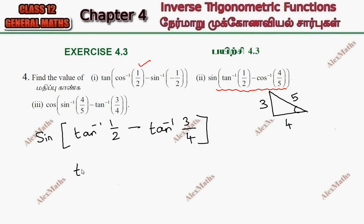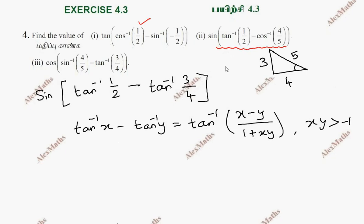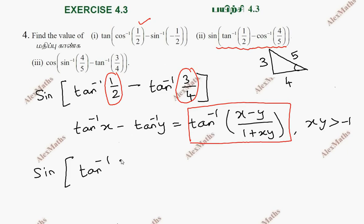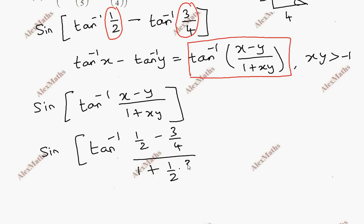This formula will be used. The formula is: tan inverse x minus tan inverse y equals tan inverse of (x minus y) by (1 plus xy), provided xy is greater than minus 1. This condition applies to sine inverse and cos inverse elements. We can use this formula, and tan inverse makes it shorter. Now, sin of tan inverse — using x and y — this formula is applied: tan inverse of (x minus y) by (1 plus xy).